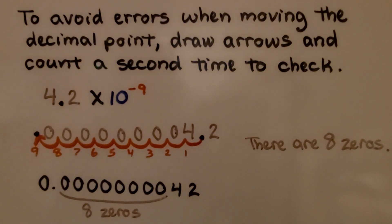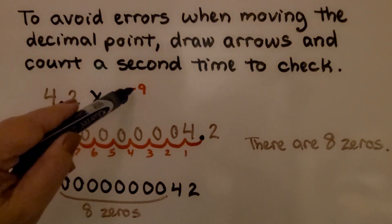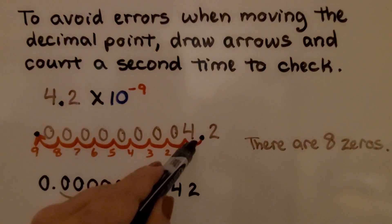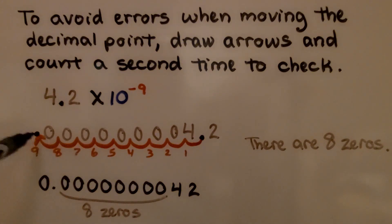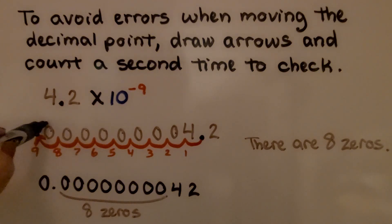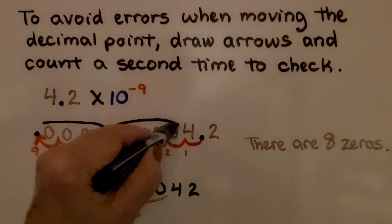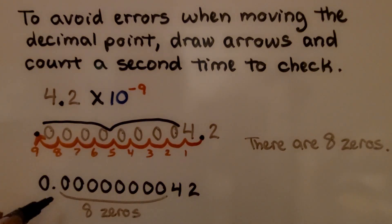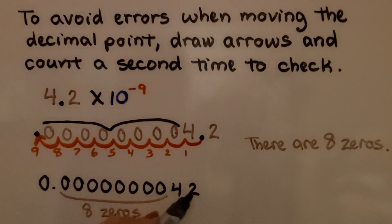To avoid errors when moving the decimal point, draw arrows and count a second time to check. Here we have 4 and 2 tenths times 10 raised to the negative 9th power. We need to move it 9 jumps, which means we have 8 zeros — 4 zeros and 4 zeros. So in standard form we write 8 zeros before the 42, and double-check to make sure we don't make a mistake.